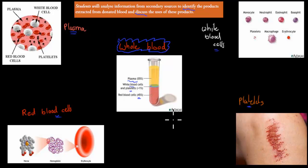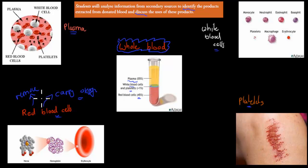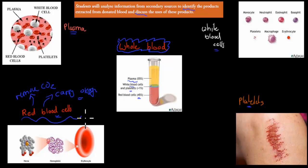What kind of role do these have in our body? Red blood cells help us carry oxygen and also help remove carbon dioxide. It was oxyhemoglobin — red blood cells have their hemoglobin and it's oxyhemoglobin if they carry oxygen, and carbaminohemoglobin if they help remove carbon dioxide. The main role of red blood cells is to carry oxygen and help remove carbon dioxide.